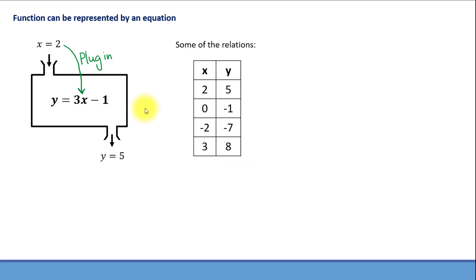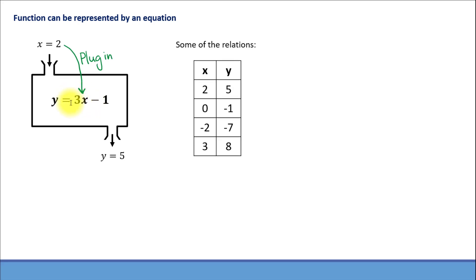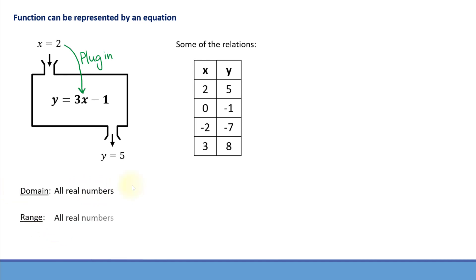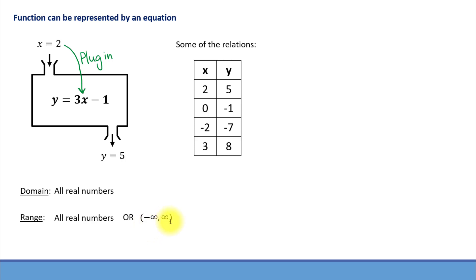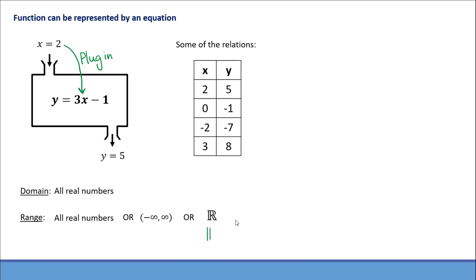Think about it — is there a number that we are not able to plug in for x and then multiply by 3 and subtract 1? Not really. Any real number we choose can always be multiplied by 3 and then we can subtract 1 from it to obtain an output. So the domain of this function contains all real numbers, and the same goes with the range — any real number can be an output for this function. This can also be written as the interval from negative infinity to positive infinity, or using the special symbol for all real numbers: uppercase R with double lines.